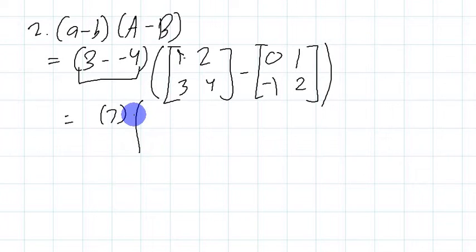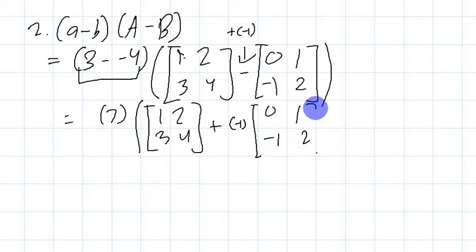And then, now I have a new scalar, which is 7, that I can actually perform scalar multiplication with. I may distribute the scalar here or I may perform the matrix subtraction first. And that's what I will do. I'm going to have 1, 2, 3, 4. This is matrix subtraction. This can be seen as plus negative 1 of 0, 1, negative 1, 2.